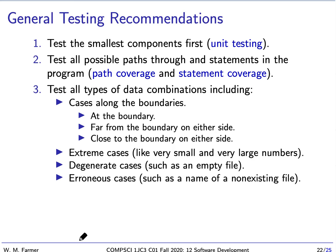It's also important to test all types of data combinations, particularly for cases along the boundaries — right at the boundary, far from the boundary on either side, or very close to the boundary on either side. We want to test extreme cases, where numbers are very small or very large. We want to test degenerate cases — cases that could actually come up but are not expected to, like the case of an empty file. And finally, there are erroneous cases where something is wrong, such as a filename for a non-existing file.